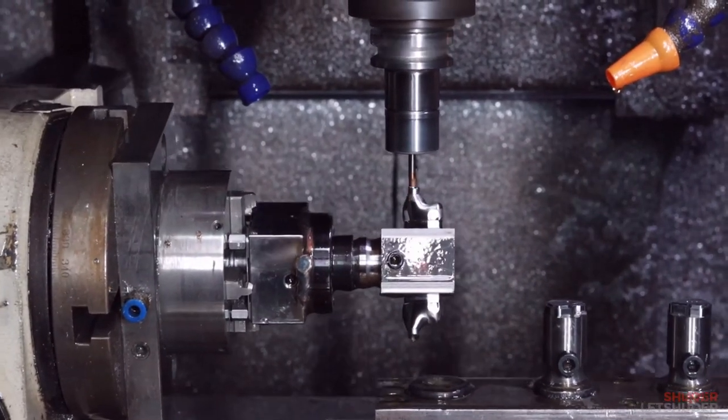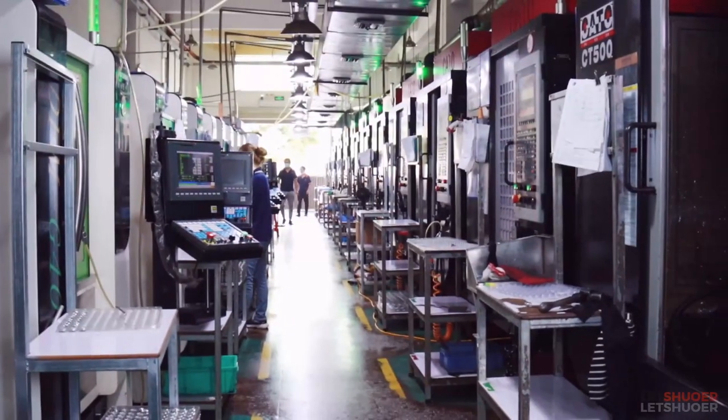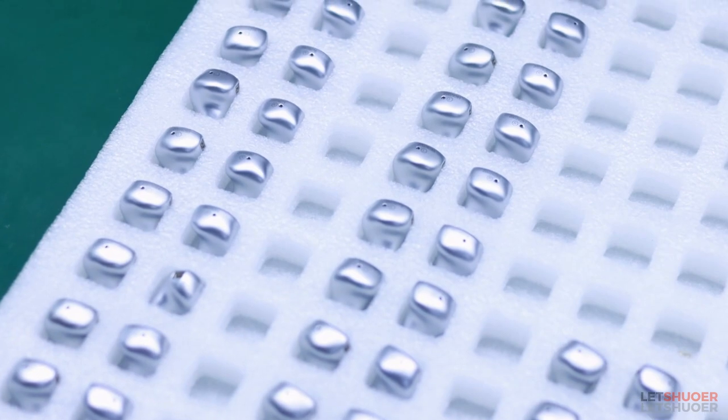This is the reason why we decided to use CNC process on EJ07M and finish it with a fine powder blast. The result is a chassis that is incredibly smooth to the touch.